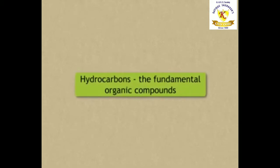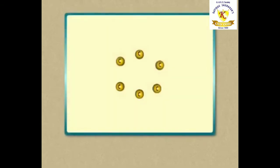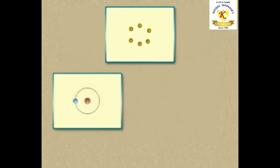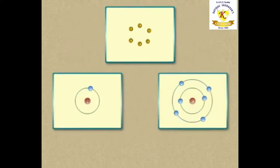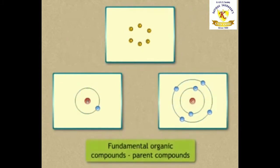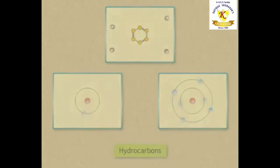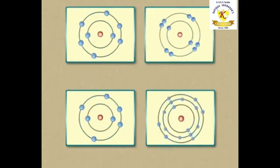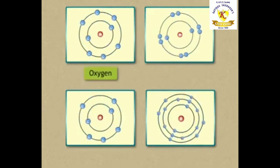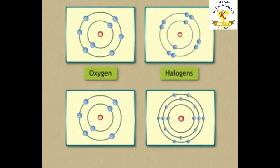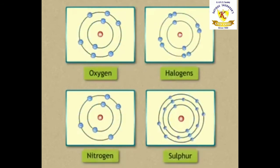Let's see hydrocarbons, the fundamental organic compounds. All organic compounds contain hydrogen along with carbon. They are the fundamental organic compounds also known as parent compounds. These compounds are known as hydrocarbons. Some organic compounds also contain oxygen, halogen, nitrogen and sulfur.